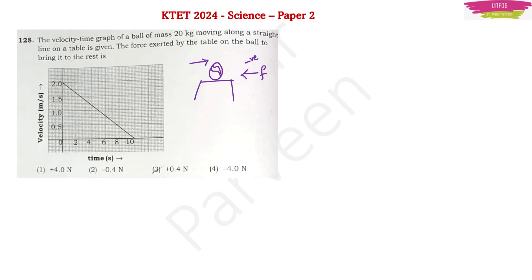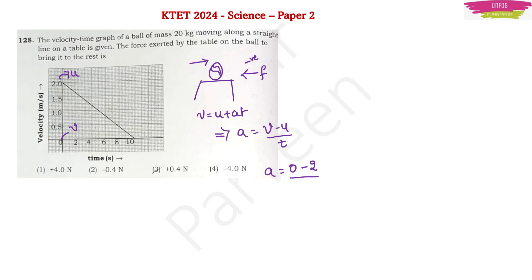From the graph, the ball of mass 20 kg is moving on a straight line on the table, meaning the initial velocity is 2 m/s and final velocity will be 0. We know that v = u + at, so acceleration = (v − u) / t. Here, final velocity is 0 and initial velocity is 2 m/s, upon time which is 10 seconds as given from the graph. So our acceleration will be −1/5 m/s².